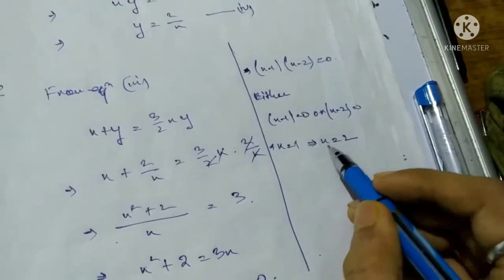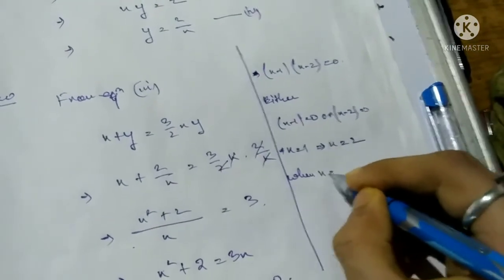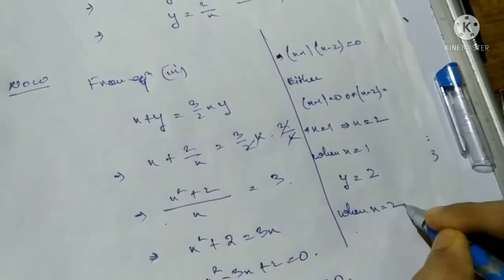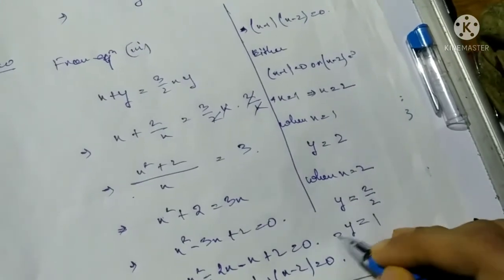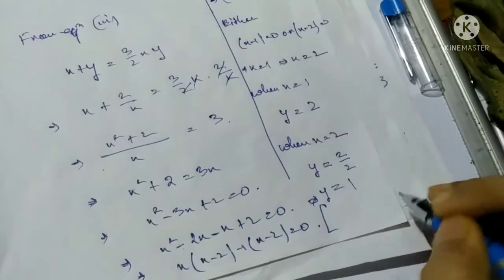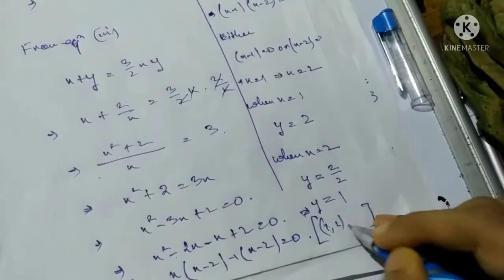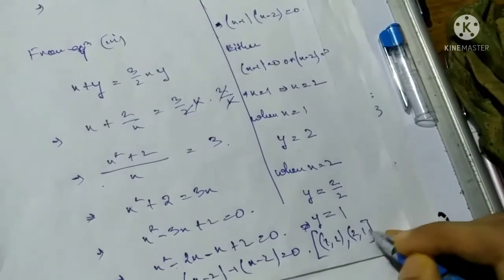When x equals 1, y equals 2/1 equals 2. When x equals 2, y equals 2/2 equals 1. Therefore the required solutions are (1, 2) and (2, 1).